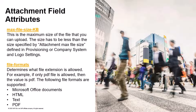Regarding the attributes for the attachment field, we can first speak about the max file size KB — this is the maximum size of the file that you can upload. The other attribute is file formats, which determines what file extension is allowed, for example Microsoft Office documents, HTML text, or PDF.